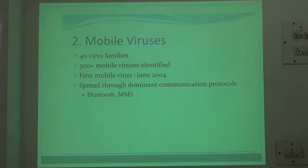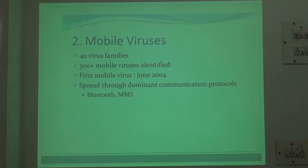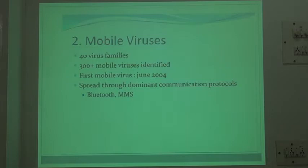The second attack possible on mobiles is mobile viruses. Mobile viruses are similar to computer viruses — they enter your system, corrupt data, copy files, and cause malfunction. Initially 14 virus families were identified; today over 300 mobile viruses have been identified. The first mobile virus was launched in June 2001. The spread of these viruses occurs in two ways: via Bluetooth and via multimedia messaging services (MMS).